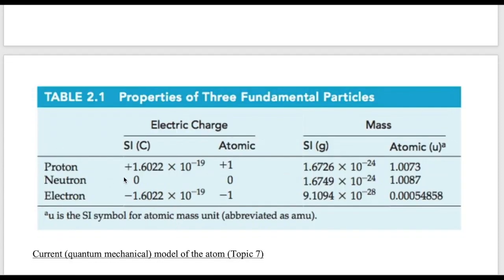So this table here summarizes the properties of all these three fundamental subatomic particles: proton, neutron, electron. The electron, as we just said earlier, has a negative charge. The value of the charge is negative 1.6 times 10 to the minus 19 Coulomb. The proton has exactly the same charge, but with the opposite sign. So a positive charge. The neutron has no charge. So it's zero.